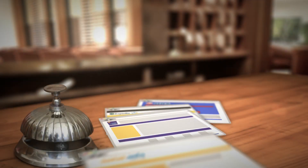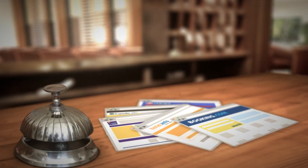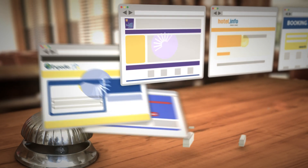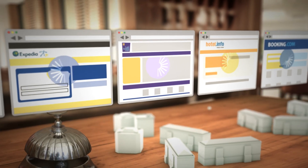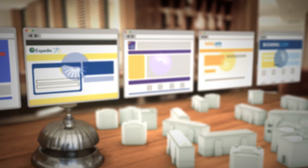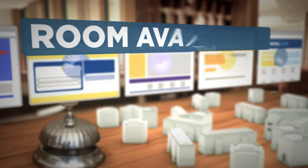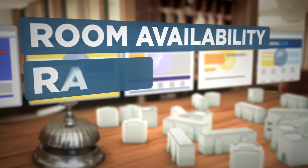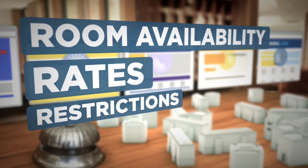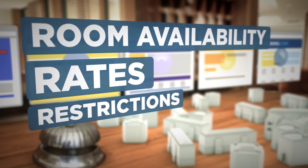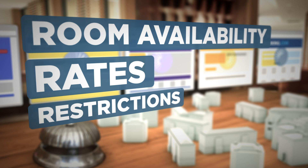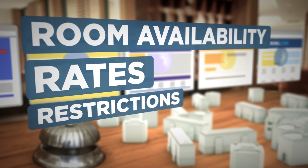Throughout the world there are thousands of booking channels and many more hotels. How can we make sure that all the information about room availability, rates and restrictions is completely up to date, especially when it's spread between so many different systems?